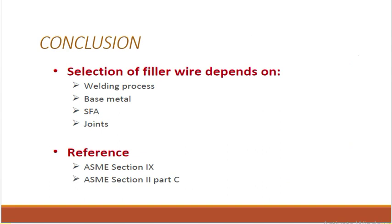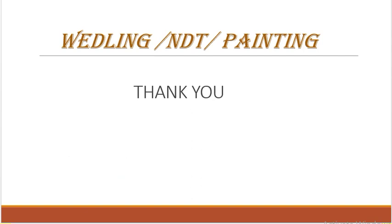Conclusion: selection of filler wire depends on three things — welding process (GTAW, GMAW, or SMAW), base metal (which base metal determines the filler selection from ASME Section 2 Part C), and joints (which joint type is specified in the WPS). References are ASME Section 9 and ASME Section 2 Part C. Thank you for watching — I hope everyone understands how to choose the filler metal based on the base metal.